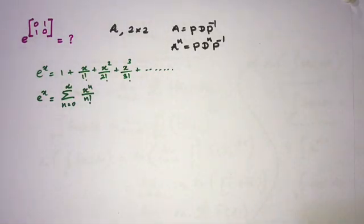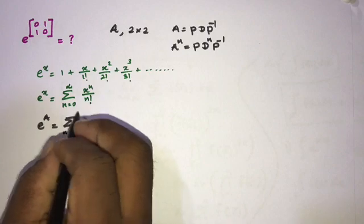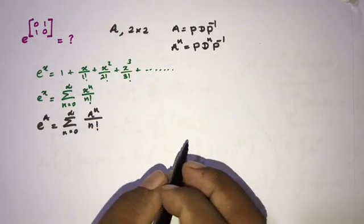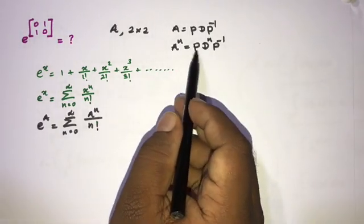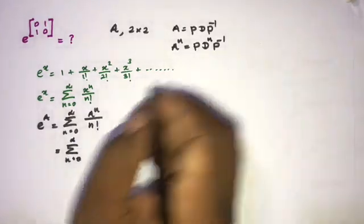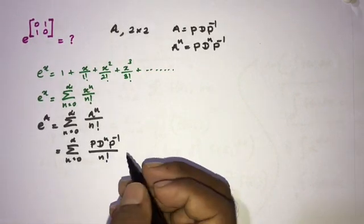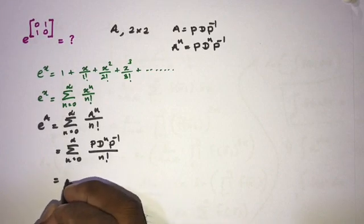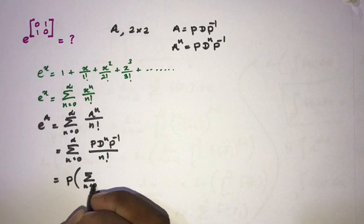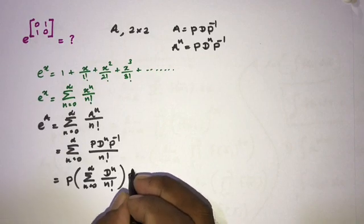Now if we take a matrix exponential, e to the A is equal to the sum from 0 to infinity of A to the n over n factorial. We know A to the n is equal to P D to the n P inverse. So we can write the sum as P times the sum of D to the n over n factorial times P inverse.